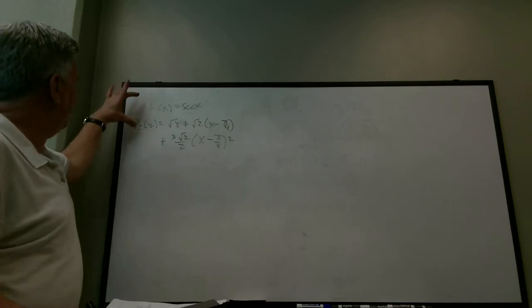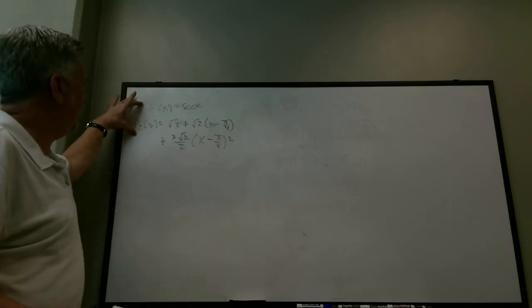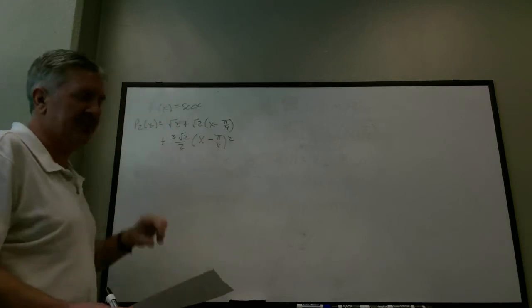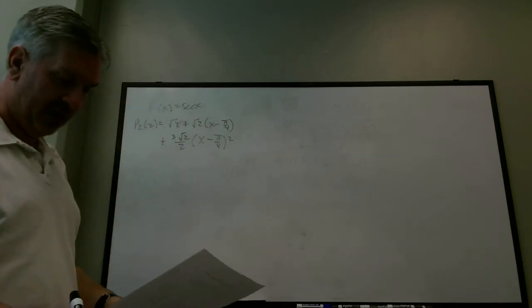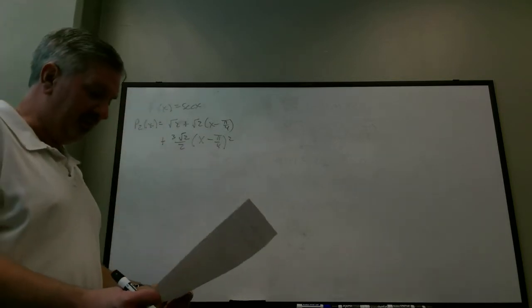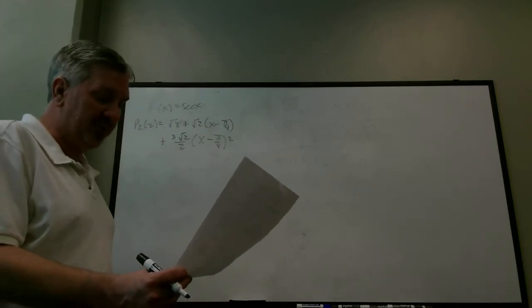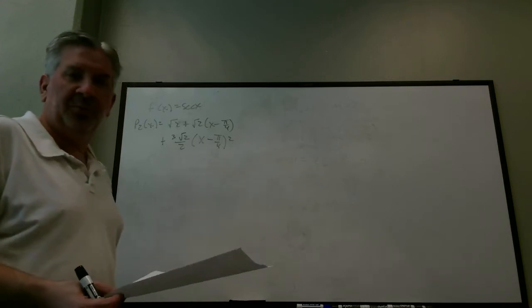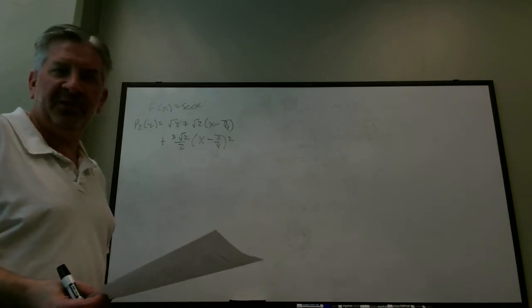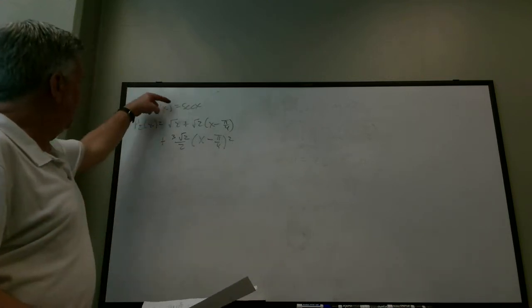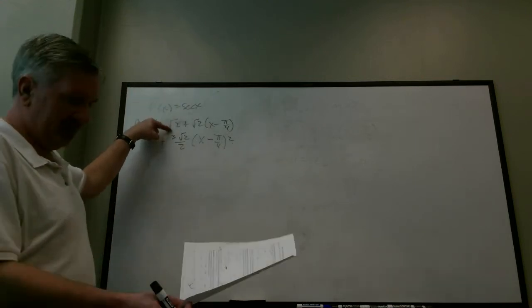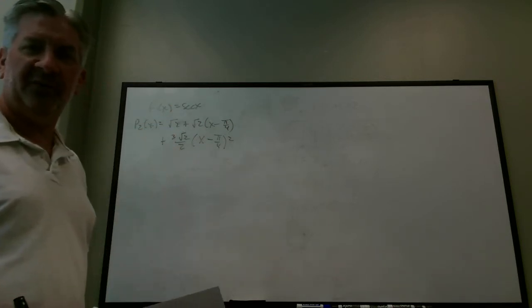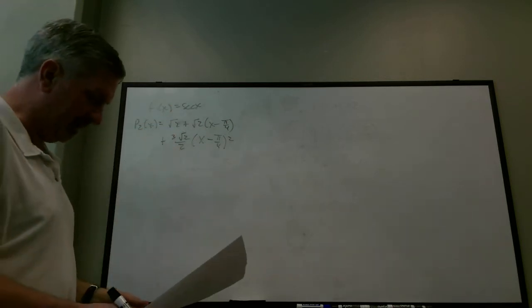Consider f(x) = sec(x) and the following second-degree polynomial: p₂(x) = √2 + √2·(x − π/4) + (3√2/2)·(x − π/4)². This approximation is centered near x = π/4. If you plug π/4 into f and p₂ you get the same thing; likewise for the first and second derivatives. They gave it to you — now complete a table comparing the values of f and p₂ at various x values.